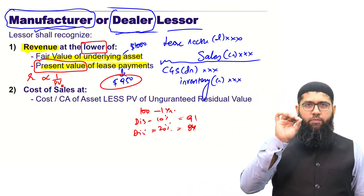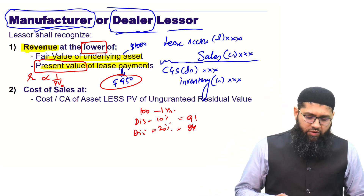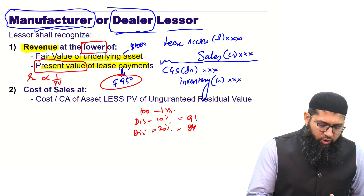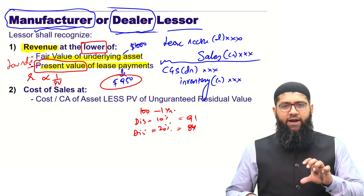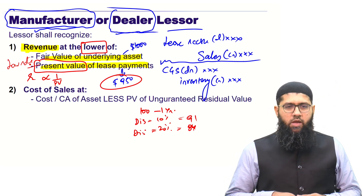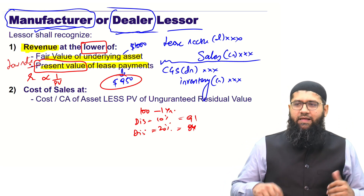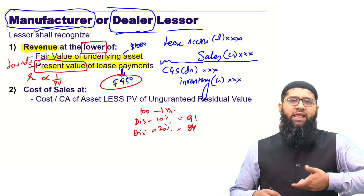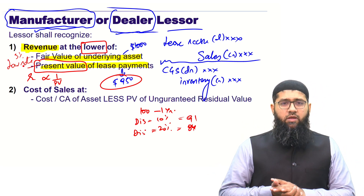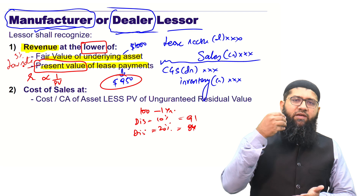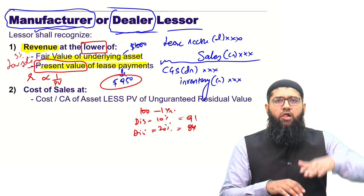At times the lessor will quote a low rate. When you quote a low rate, the present value increases, and when the present value increases, revenue also increases. So as a lessor, I might say I am only charging 3% although I am actually charging 10%, because I know that if the amount is discounted at 3%, the present value would be high and my revenue would also be high.